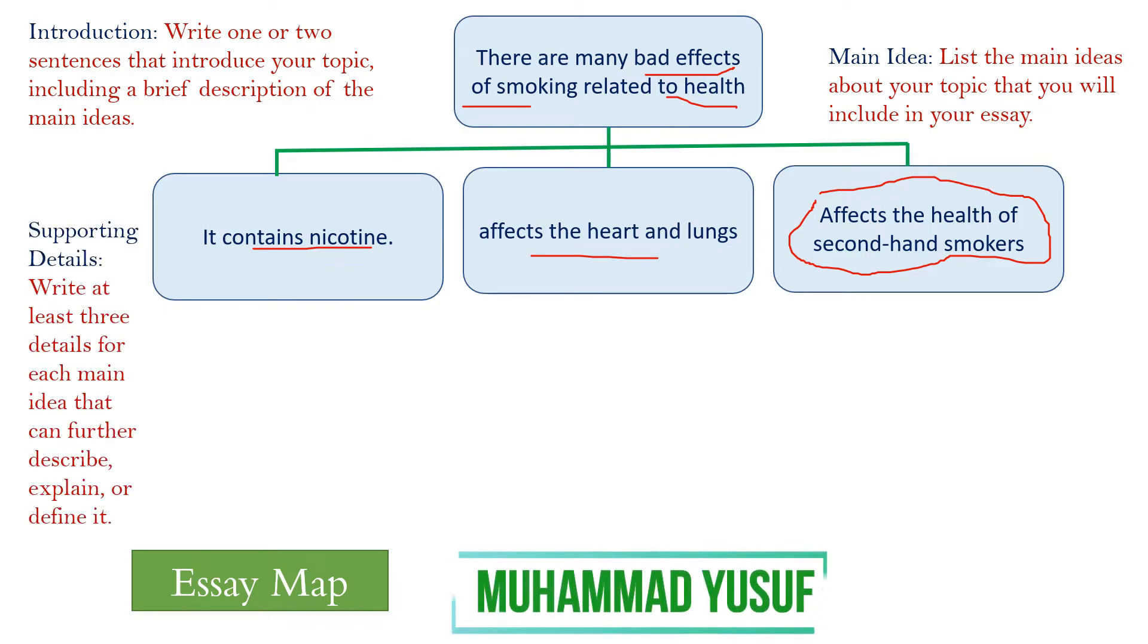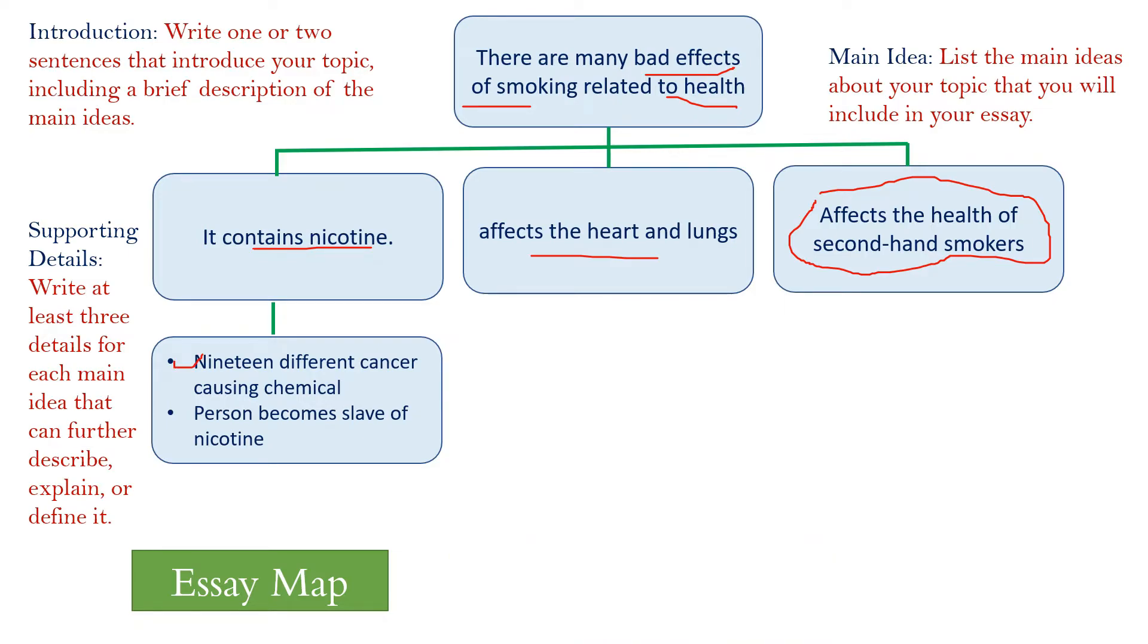Let's see the supporting details. These are two supporting details: 19 different cancer-causing chemicals, and person becomes slave of nicotine. So these two supporting details relate to this main idea.